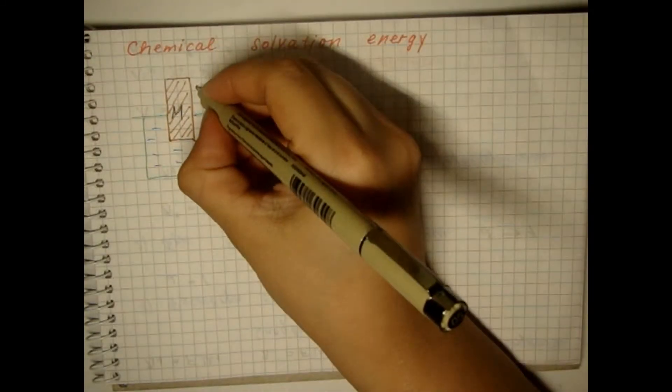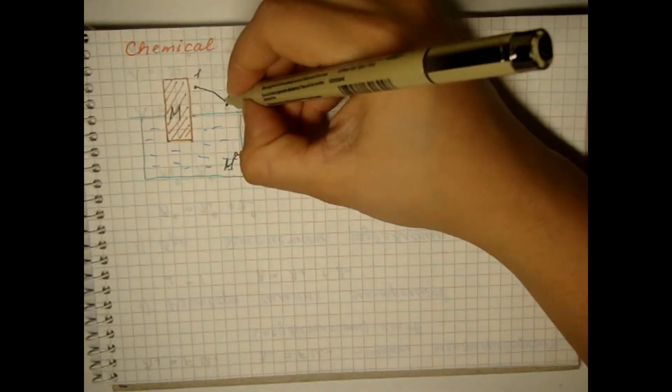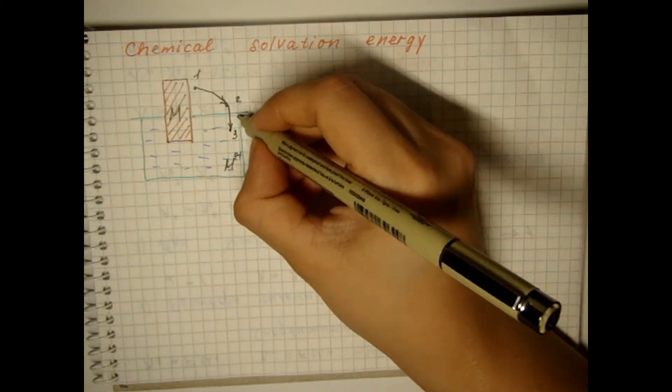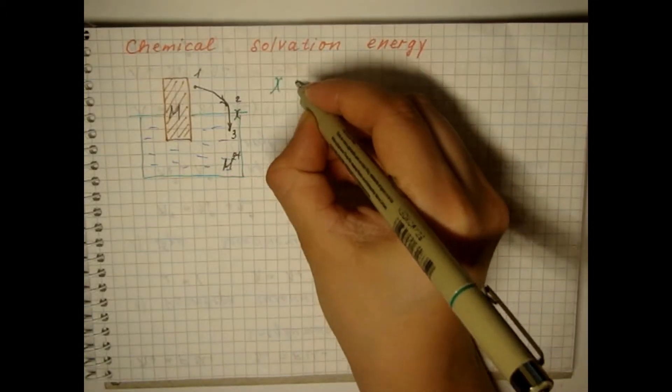Some potential jump occurs at the solution-air interface due to a certain orientation of the solvent dipoles, so-called surface potential.